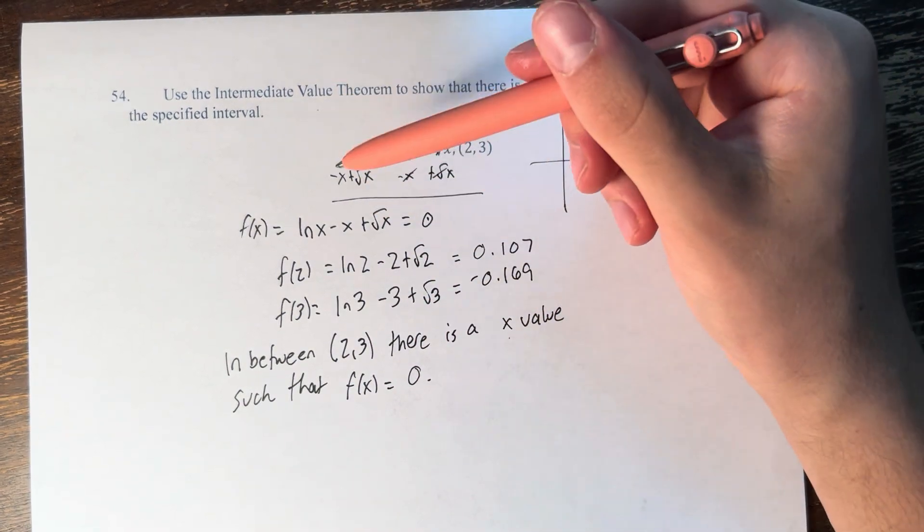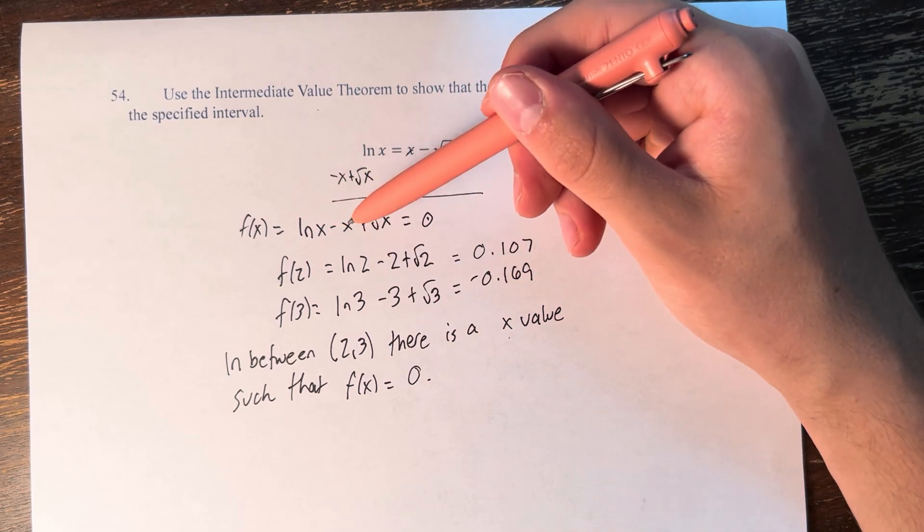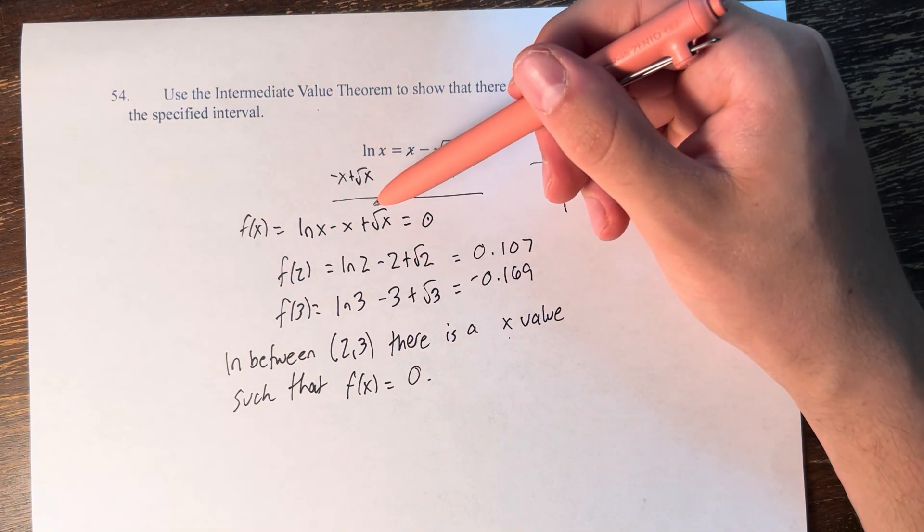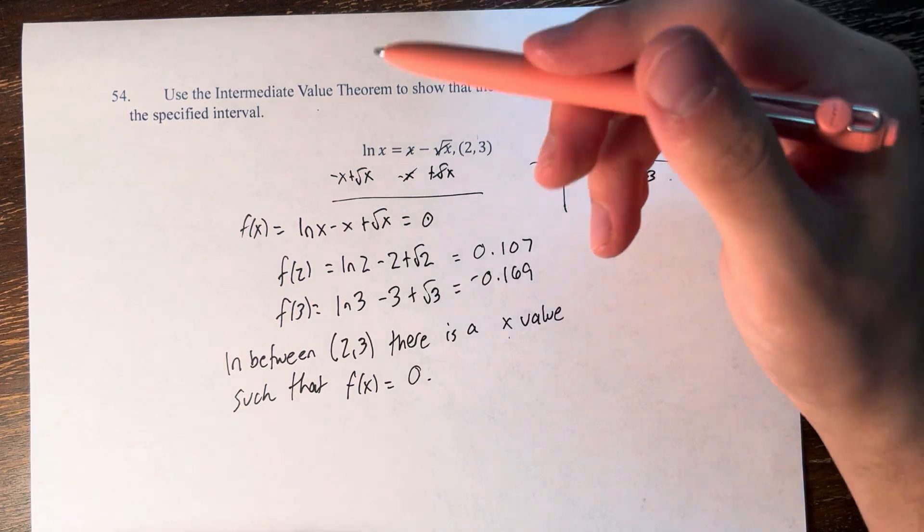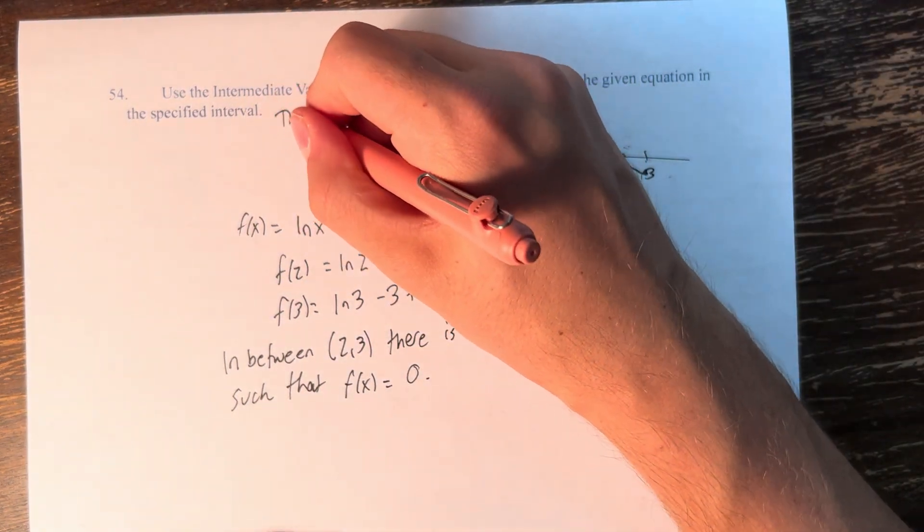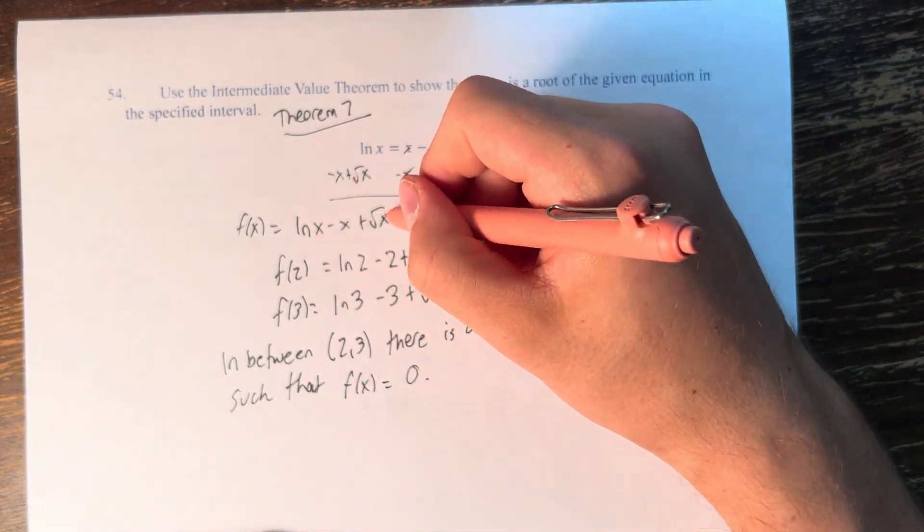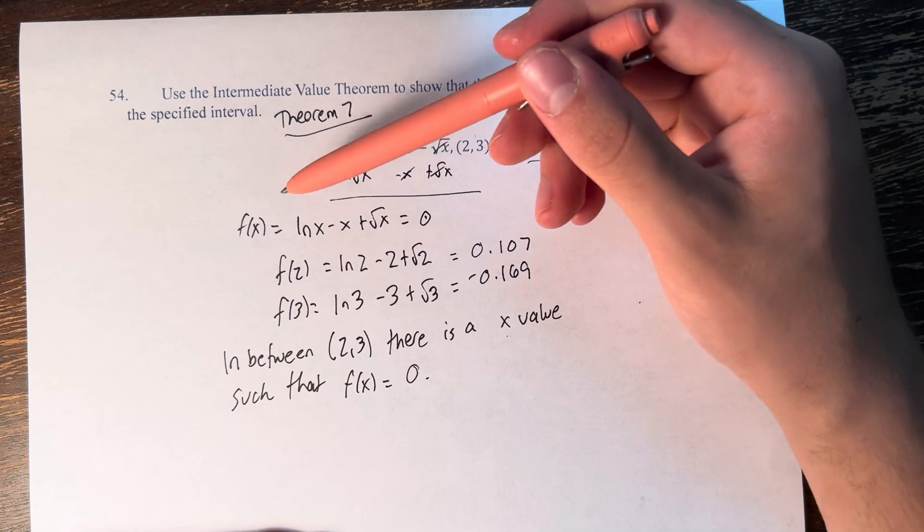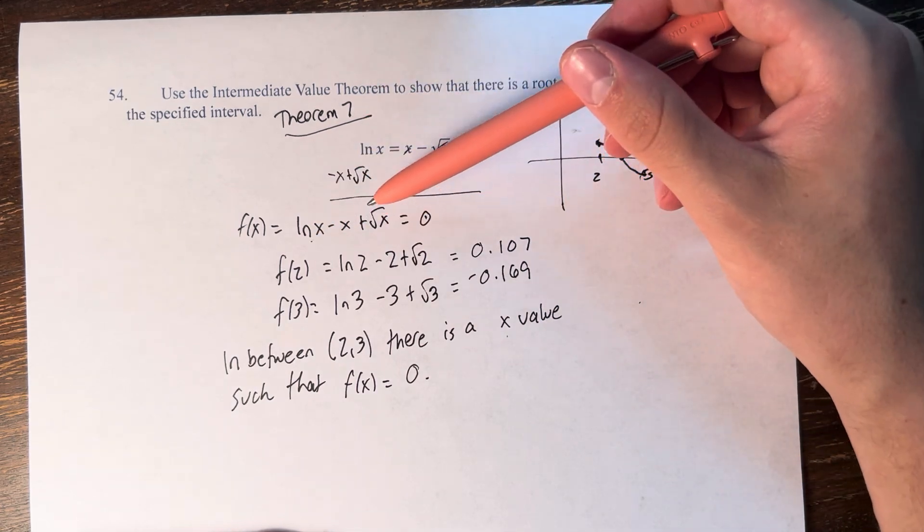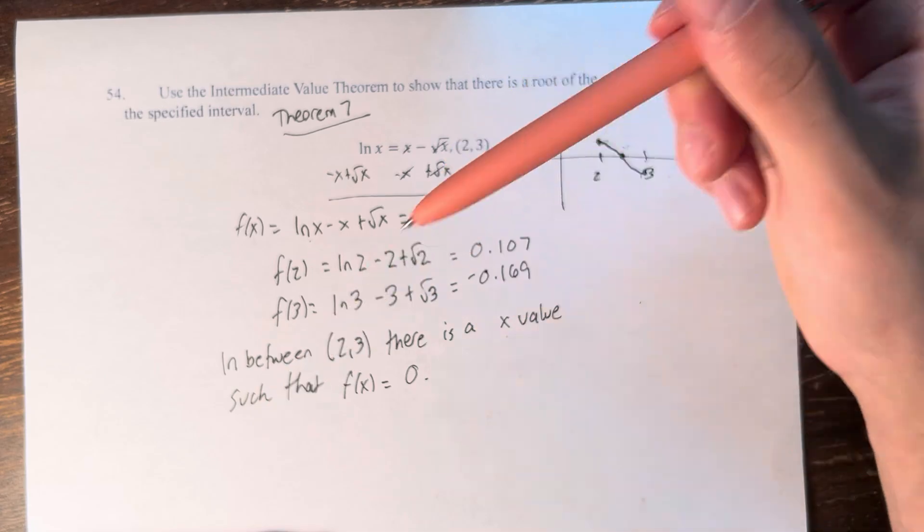Looking at the function ln x - x + √x, we have a logarithmic function, a polynomial, and a root function all added and subtracted together. From Theorem 7, we know all three of these individual functions are continuous over their domains. For ln x and √x, this means x > 0, and for x itself, it can be all real numbers.